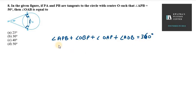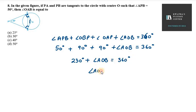So you have APB which is 50 degrees, OBP which is 90 degrees, and OAP which is 90 degrees. Then AOB is unknown to us. 90 plus 90 is 180, 180 plus 50 is 230 degrees. So 230 degrees plus angle AOB equals 360 degrees. Therefore, angle AOB equals 360 minus 230 degrees, which is 130 degrees.